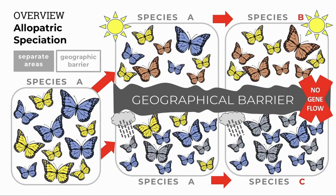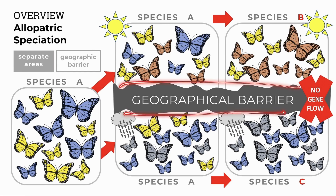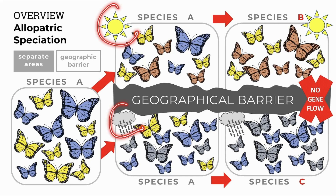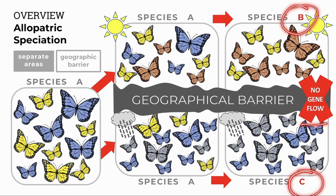For allopatric speciation, a population is split into separate areas by a geographical barrier like a mountain, lake, river, or road. This geographical barrier separates the population and each group is exposed to different conditions. Different characteristics will be beneficial in the different environments on either side of the barrier. Eventually, over a period of time, different species will form, with no gene flow between them as they become reproductively isolated.